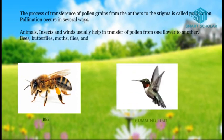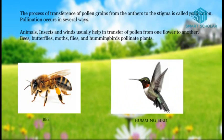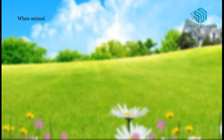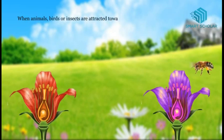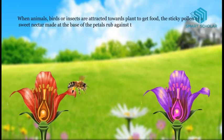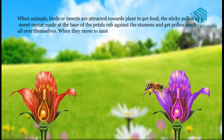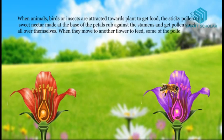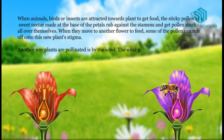Bees, butterflies, moths, flies, and hummingbirds pollinate plants. When animals, birds, or insects are attracted towards a plant to get food, the sticky pollen or sweet nectar made at the base of the petal rubs against the stamen and gets pollen stuck all over themselves. When they move to another flower to feed, some of the pollen can rub off onto the new plant. Another way plants get pollinated is by the wind — the wind picks up pollen from one plant and blows it onto another.